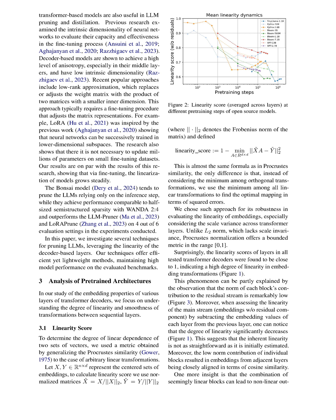We delve into an extensive analysis of the linearity properties of transformer decoders, particularly focusing on their behavior during pre-training and fine-tuning stages. Our study uncovers a remarkable finding that the embedding transformations between sequential layers in transformer decoders exhibit nearly perfect linearity, challenging conventional understanding and offering new avenues for model optimization.